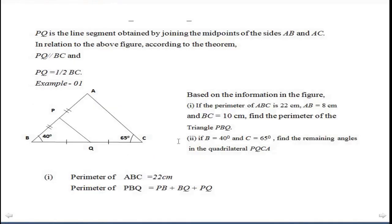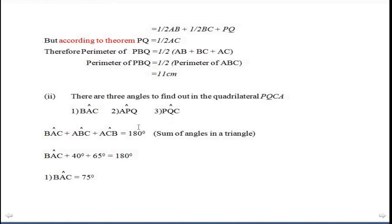Let's move to the second part of the question. There are 3 angles to find in the quadrilateral PQCA: angle BAC, angle APQ, and angle PQC. Since the sum of angles in triangle ABC equals 180 degrees, angle BAC plus angle ABC plus angle ACB equals 180 degrees.